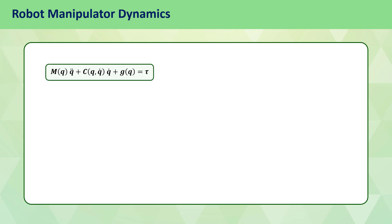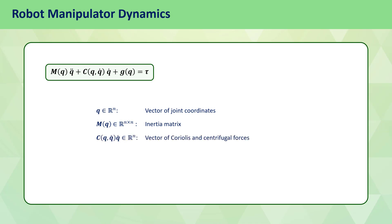In the previous video, we showed how to obtain the dynamic model of an n-degree of freedom robot manipulator. We showed that the dynamic model can be written as M(q) q̈ + C(q, q̇) q̇ + g(q) = τ, where q is the vector of joint coordinates, M(q) is the inertia matrix, C(q, q̇) q̇ is the vector of Coriolis and centrifugal forces, g(q) is the vector of gravity forces, and τ is the vector of joint torques.